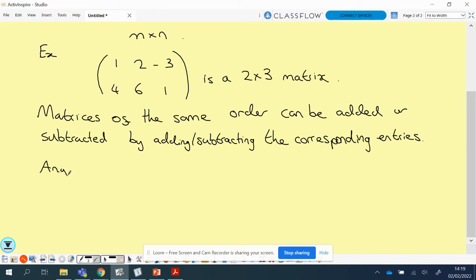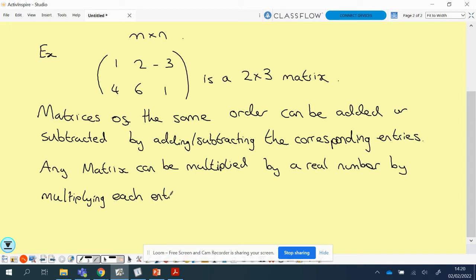Also, any matrix can be multiplied by a real number by multiplying each entry by that real number. So matrices of the same order can be added or subtracted, and if you want to multiply a matrix by a real number, you multiply each entry by that real number. It's as straightforward as it sounds.